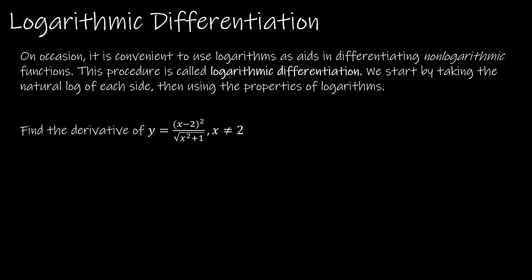Now that we understand the derivative of the natural log function, we want to talk about a process called logarithmic differentiation. When you use logarithmic differentiation, you're not actually taking the derivative of a logarithmic function; however, you're taking the logarithm of each side and then finding the derivative. It might seem counterintuitive — why would we take the natural log of each side? But if I were to find the derivative of this function without it, I would need the quotient rule, the chain rule, and quite a lot going on. So this is just another strategy to simplify the process.